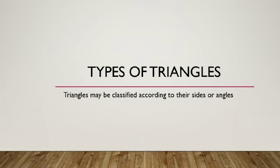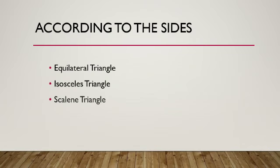Now, the types of triangles. Triangles may be classified according to their sides or angles. First, according to the sides, there are three types of triangles: equilateral triangle, isosceles triangle and scalene triangle.